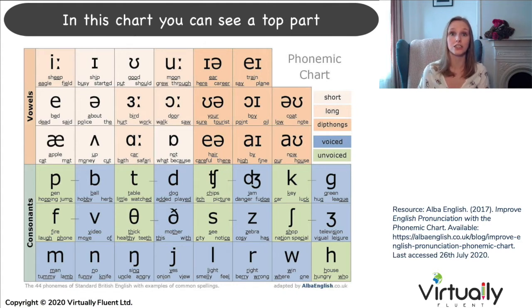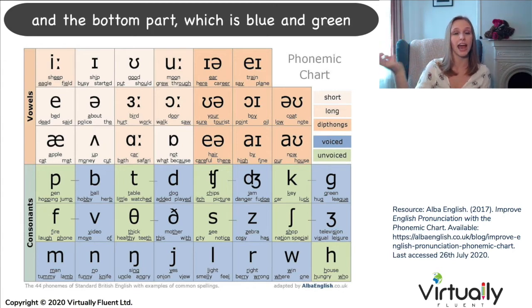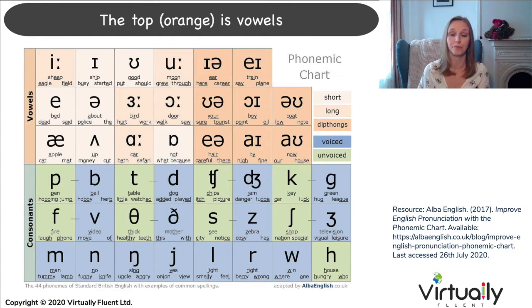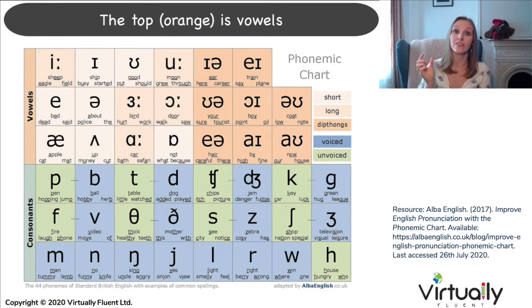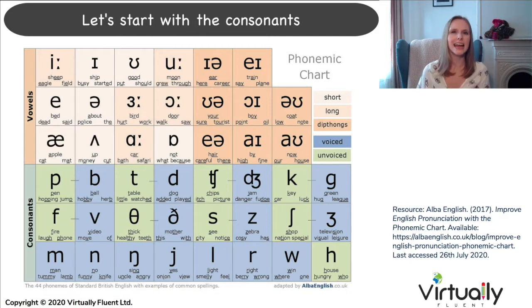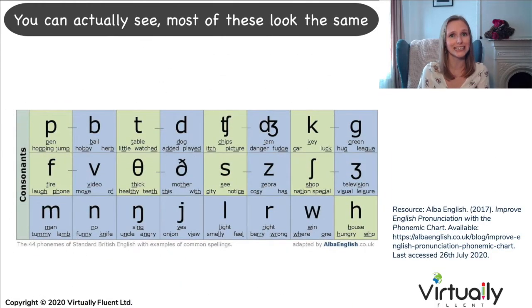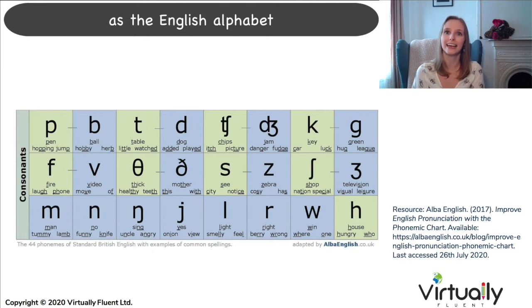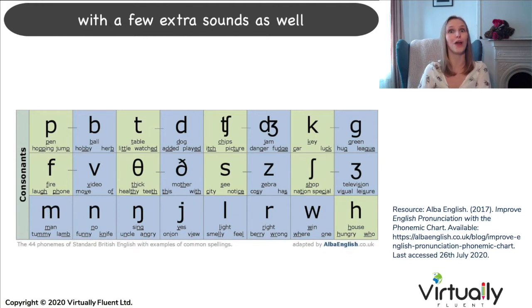In this chart you can see a top part which is orange and the bottom part which is blue and green. The top, orange, is vowels and the bottom is consonants. Let's start with the consonants. You can actually see most of these look the same as the English alphabet, with a few extra sounds as well.